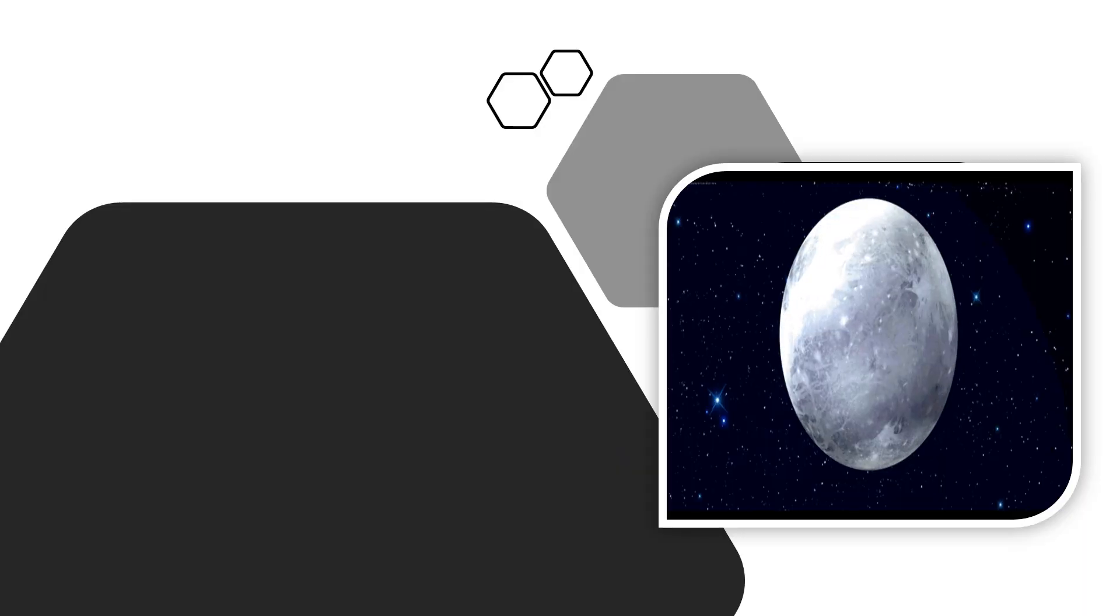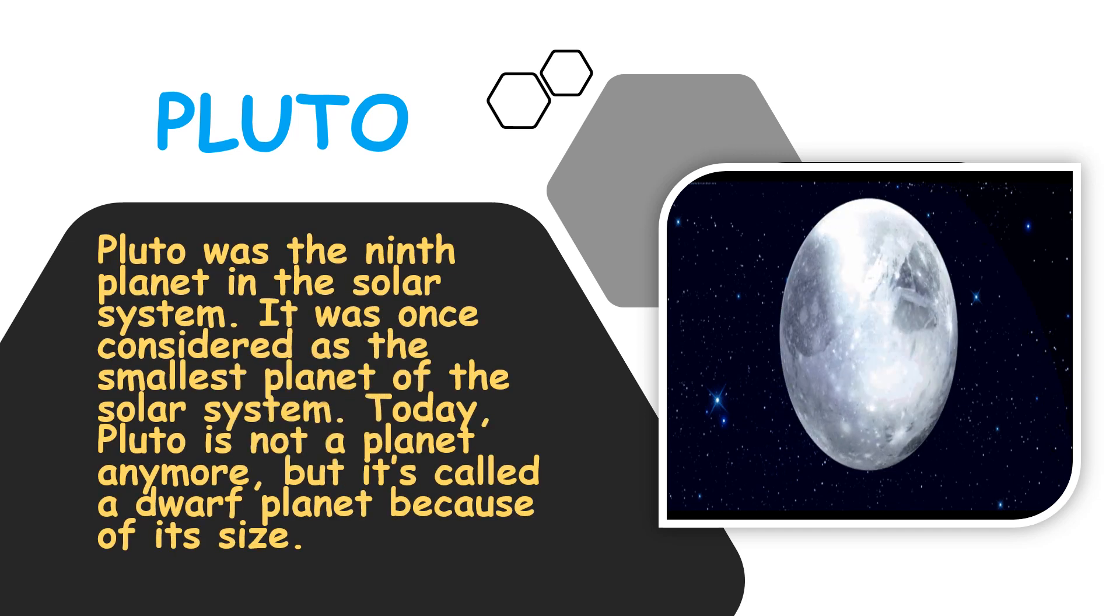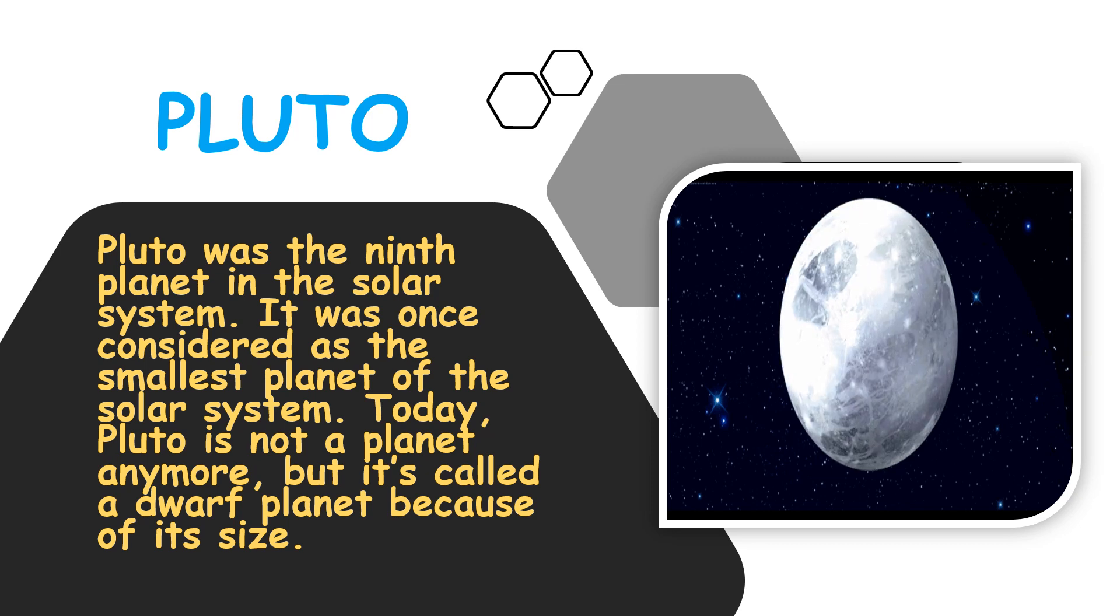So, we have already covered all the eight planets. Oh, which one is this one, children? Oh, it's written Pluto. I wonder what is it? Pluto was the ninth planet in the Solar System. It was once considered as the smallest planet of the Solar System. Today, Pluto is not a planet anymore. But it is called a dwarf planet because of its size.